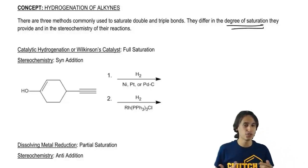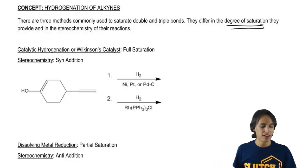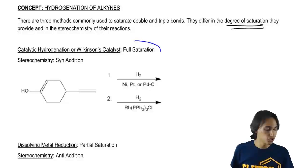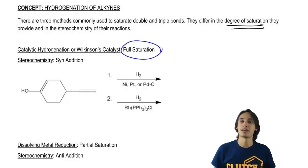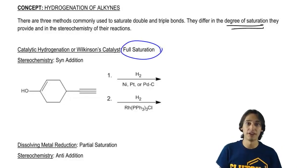Let's look at the first and probably simplest form of hydrogenation, and that would be what we call full saturation. What that means is that I'm taking a double bond or a triple bond and I'm fully saturating it with hydrogens.